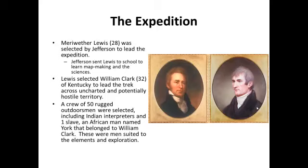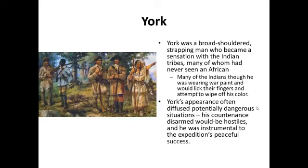York was a very broad-shouldered, strapping man who became a sensation with many of the Native American tribes as they traveled west. Many of these tribes had never seen a dark-skinned African man. When he made contact with Native Americans, he was quite disarming — many thought York was wearing war paint and would lick their fingers trying to wipe off his color. York's appearance often diffused potentially dangerous situations with hostile Native Americans, and he was quite instrumental to the expedition's peaceful success.